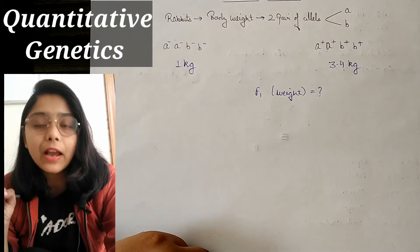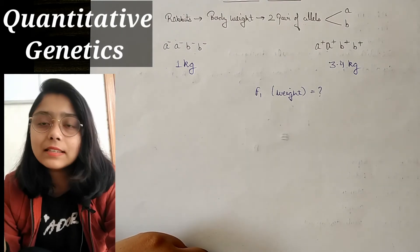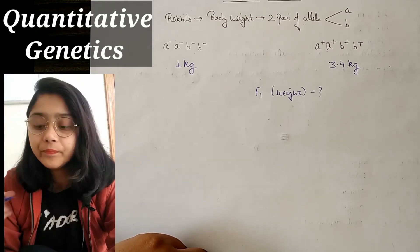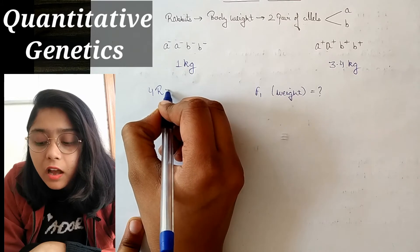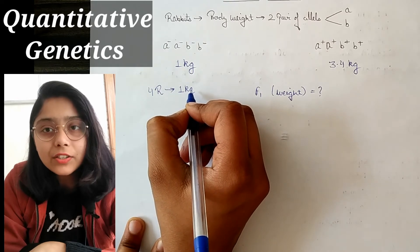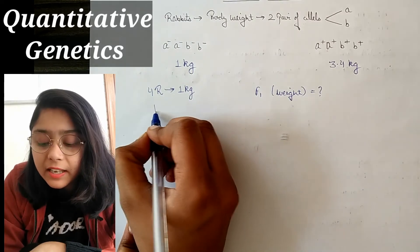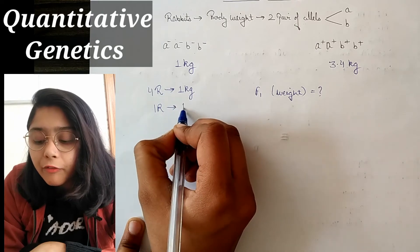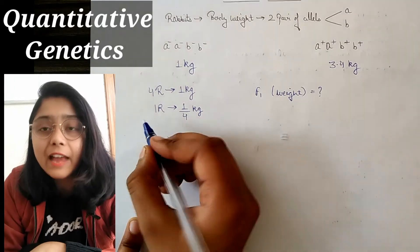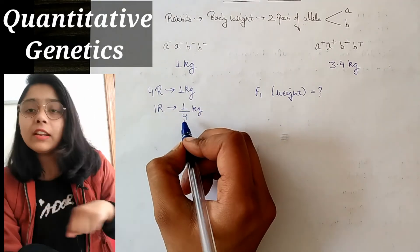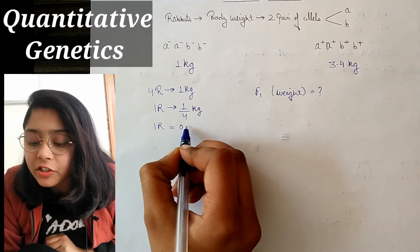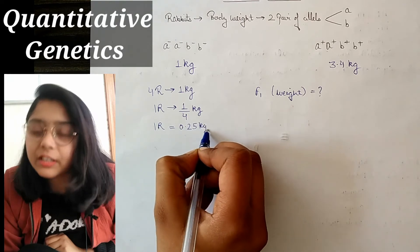उसमें mention भी था कि additive effect होगा, तो हम easily इसको recognize कर सकते हैं कि quantitative genetics की problem है और उसी तरह solve होगी. यहाँ 4 recessive genes responsible हैं 1 kg weight के लिए. तो 1 recessive gene 1/4 kg यानी 0.25 kg weight का contribution कर रहा है.